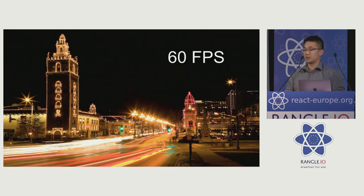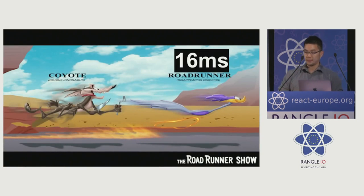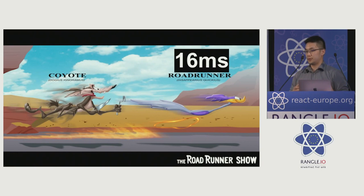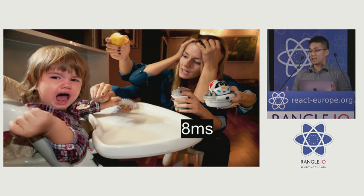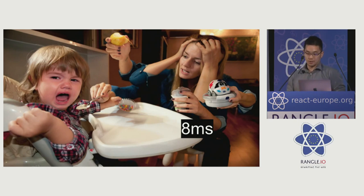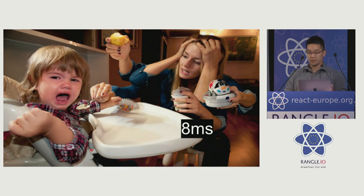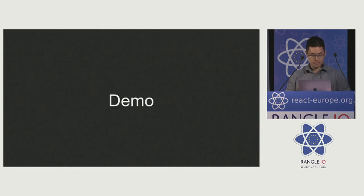60 frames per second — this is the gold standard for smooth UX, and if you do some simple math, that's 16 milliseconds per frame. But it's not that simple, because the DOM needs another 8 milliseconds to update. That means you've got 8 milliseconds left for your business logic and any kind of state management. That's not a whole lot of time. So this is how much time we have for everything else.